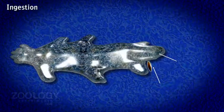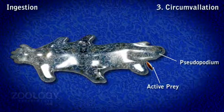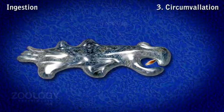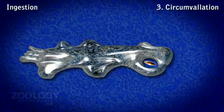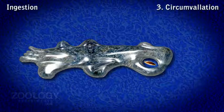3. Circumvallation: In this method, Amoeba Proteus engulfs an active prey like a ciliate or flagellate. Amoeba forms out pseudopodia around the prey with a cup-like structure called a food cup. The pseudopodia are not in intimate contact with the prey during engulfment. The opening of the food cup constricts, leaving a pore which soon closes. In this way, a non-contractile food vacuole is formed with the prey in a considerable amount of water.